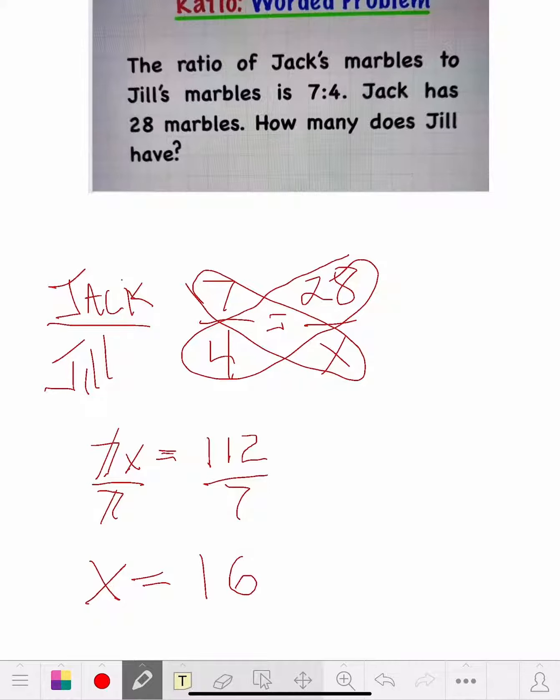And that's it. 16. So that means Jack has 28 marbles and Jill has 16. And that's the same proportion as seven to four.